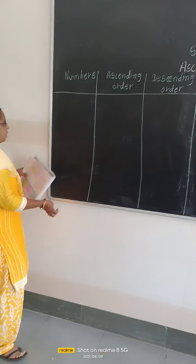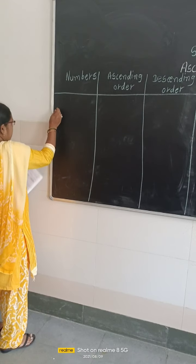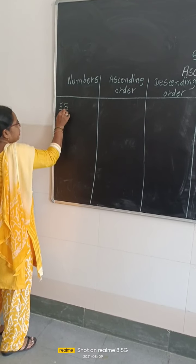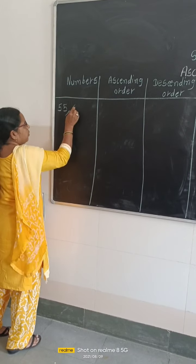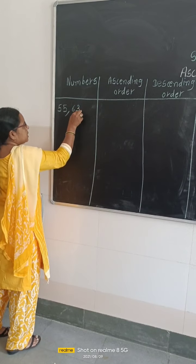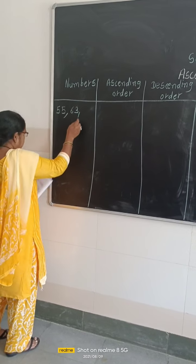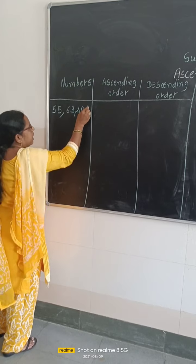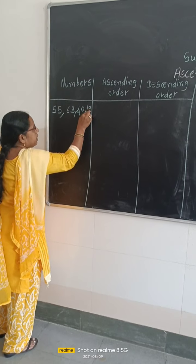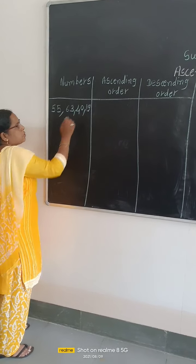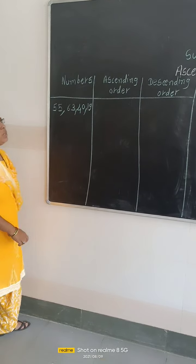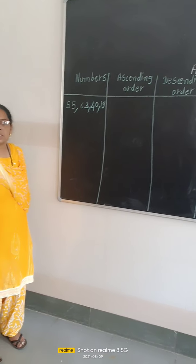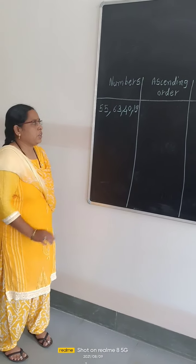Now, first example. I am writing the numbers: 55, 63, then 40 and 90. Students, again we are arranging the given numbers in their ascending order.